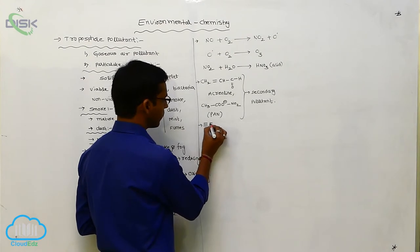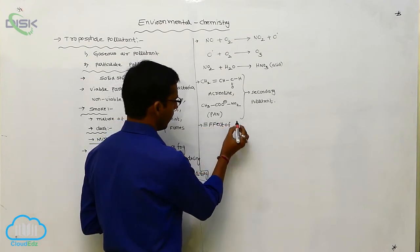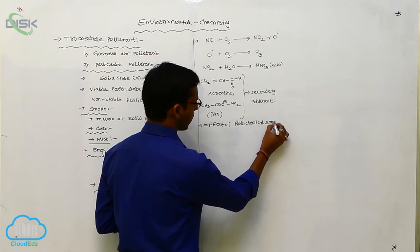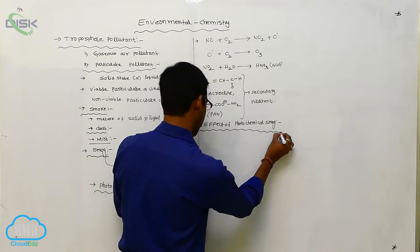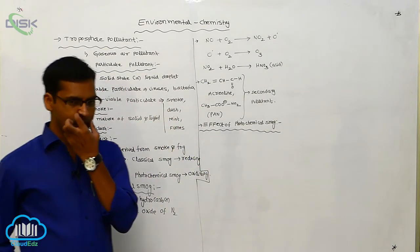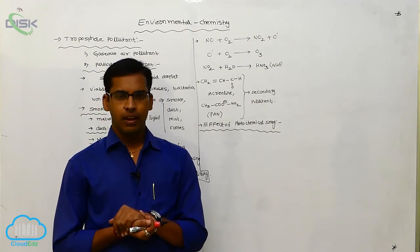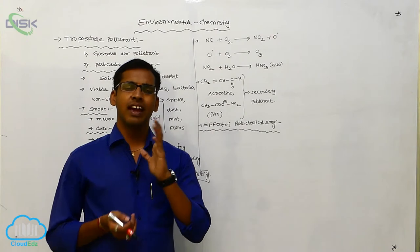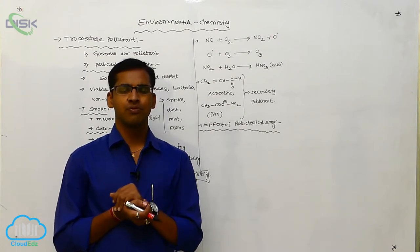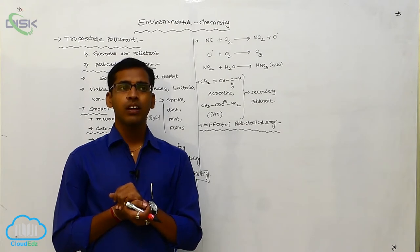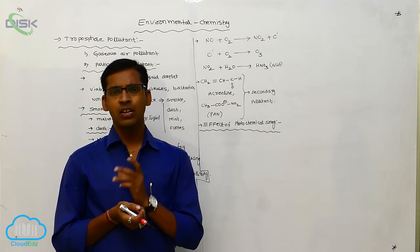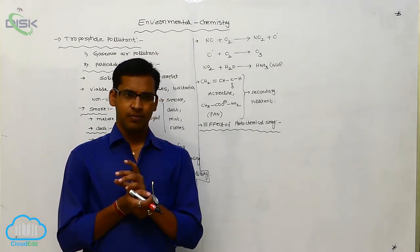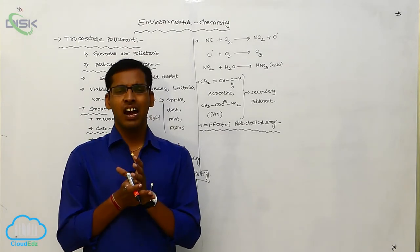Effect of photochemical smog. So what are the effects? This photochemical smog mainly affects human beings. It mainly causes headache, throat infection, cough, respiratory system damage, and it causes very serious damage in plants. It mainly affects plant tissues. So many effects are caused in plants and animals.